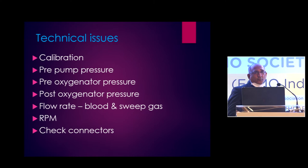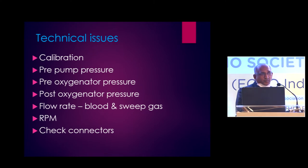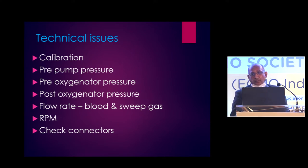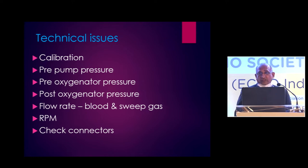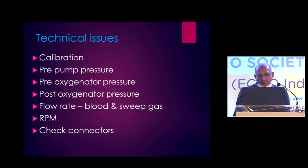Check RPM and flow rate — that is very important. As it is a centrifugal pump, your blood flow rate may not be the same as what you set with the RPM. With the same RPM the blood flow rate keeps going up and down, and that depends on preload and afterload. So if there is any change in preload or afterload, with the same RPM you might have a change in the blood flow rate. With the same RPM if the blood flow rate is going down, it means there is something wrong with the circuit. Check all the connectors — whether they are loose, as air can go inside or there can be bleeding from there.